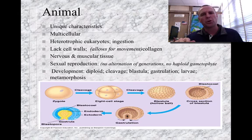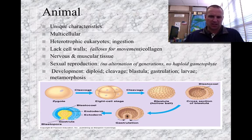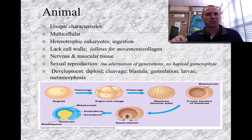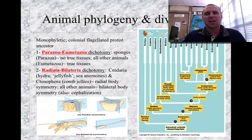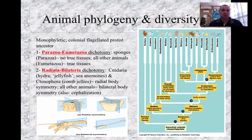You need to know the order: going from the zygote (the diploid) to cleavage, to blastula, to gastrula, and finally to the adult stage. It's easy to keep blastula and gastrula in order because B comes before G. Now, when we talk about the phylogeny and diversity within animals, their ancestor originated from a colonial flagellated protist a long, long time ago.